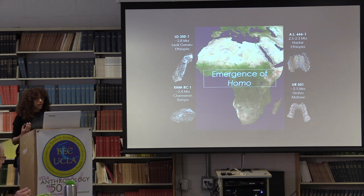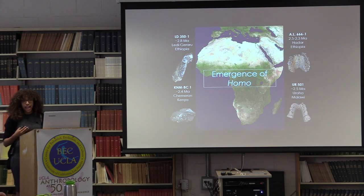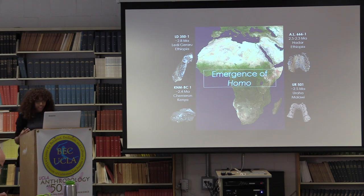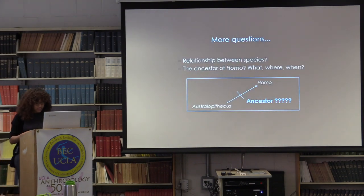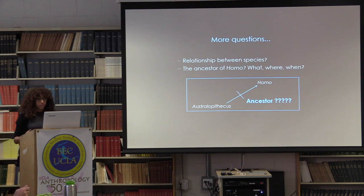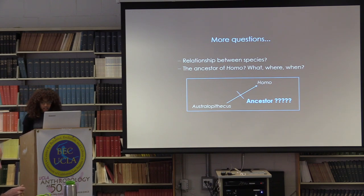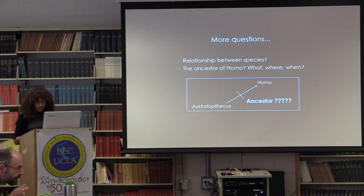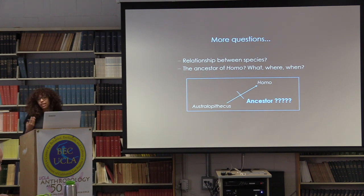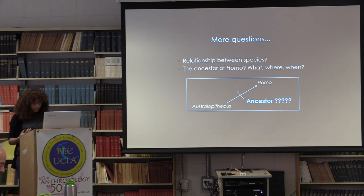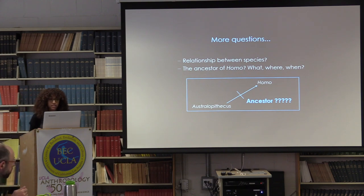Although there has been some disagreement amongst researchers regarding the classification of these specimens as Homo, there has also been an increasing recognition that the evolution of Homo was multi-branched and bushy. This bushiness and wide morphological variability, coupled with the discovery of new fossil specimens, have provided further insight into our current understanding of early Homo, but have at the same time led to new questions and debates about how these species are connected — questions such as how many species are in our genus, where the ancestor of Homo would come from, and what it would have looked like.